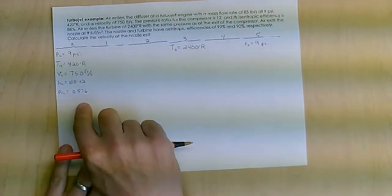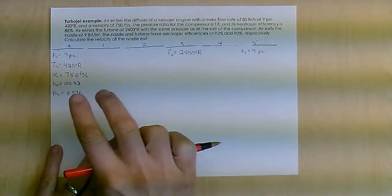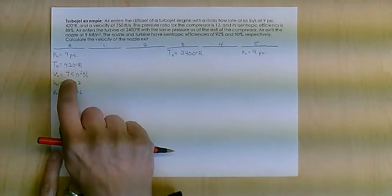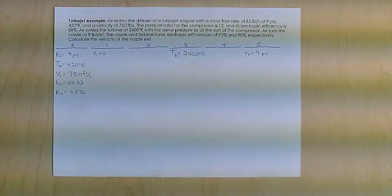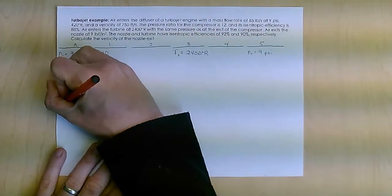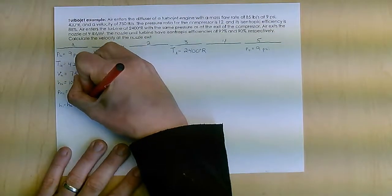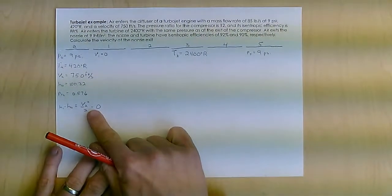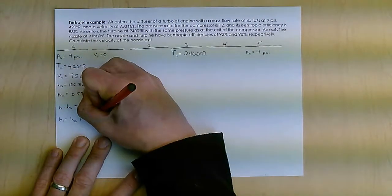So going from state A to state 1, I have a diffuser. Isentropic. But essentially with the diffuser, there's no heat transfer. Therefore, the change in enthalpy basically equals the change in kinetic energy. I'm going to assume that the velocity here is 0. It's not actually 0, but it's insignificant compared to the 750 feet per second that's coming in. So what I have then is H1 minus HA, that change in enthalpy equals VA squared over 2 minus 0. Again, because the final kinetic energy here we're going to assume is 0. So from that, I can find that H1 equals HA plus VA squared over 2.